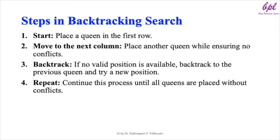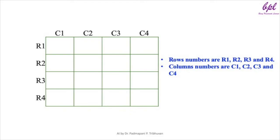Here is a step-by-step overview of the backtracking process. We start by placing a queen in the first row, then move to the next column, trying to place another queen while checking for conflicts. If we can't place a queen without conflicts, we backtrack to the previous column and try a new position. This process is repeated until all four queens have been placed without any conflicts.